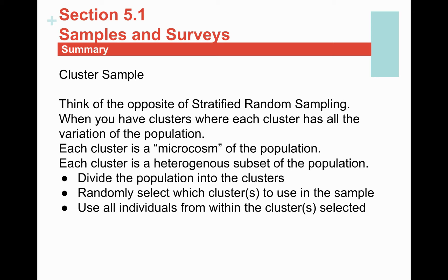In my hypothetical example where the population of interest is all high school seniors in the Tri-Valley area, the clusters I might consider are the large public high schools: Amador Valley, Livermore, Granada, Foothill, Dublin High, San Ramon Valley, Monte Vista, Cal High, Dougherty Valley. Those might be the clusters. I can randomly select one or more of those high schools and then use all the high school seniors in that particular cluster.